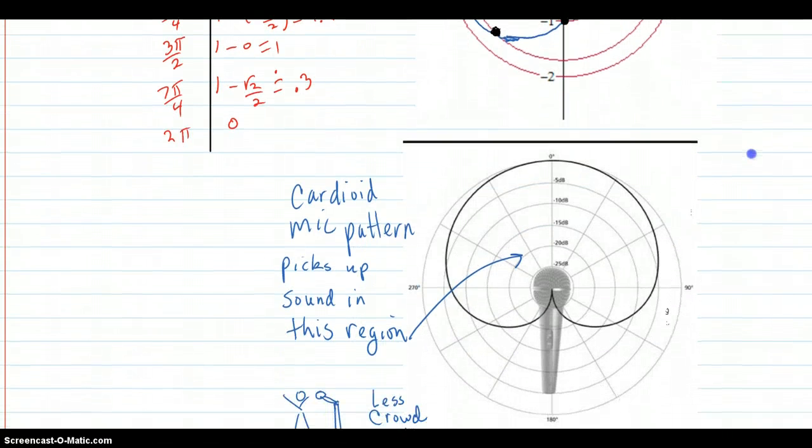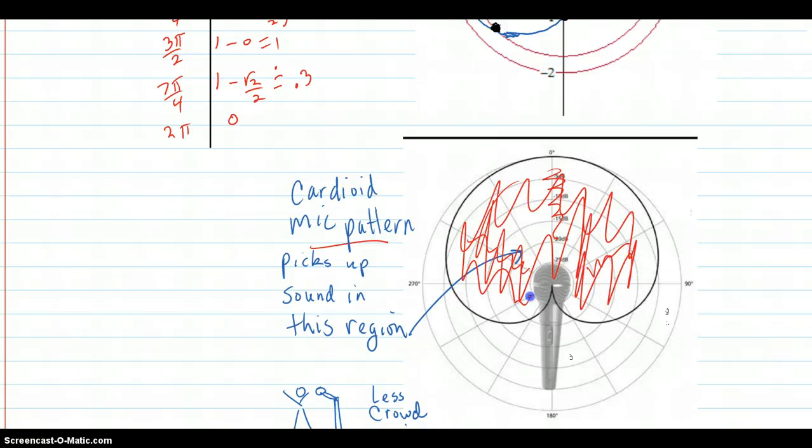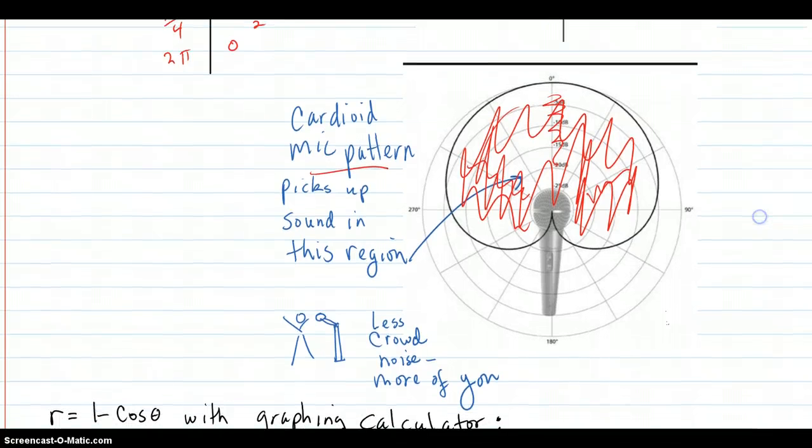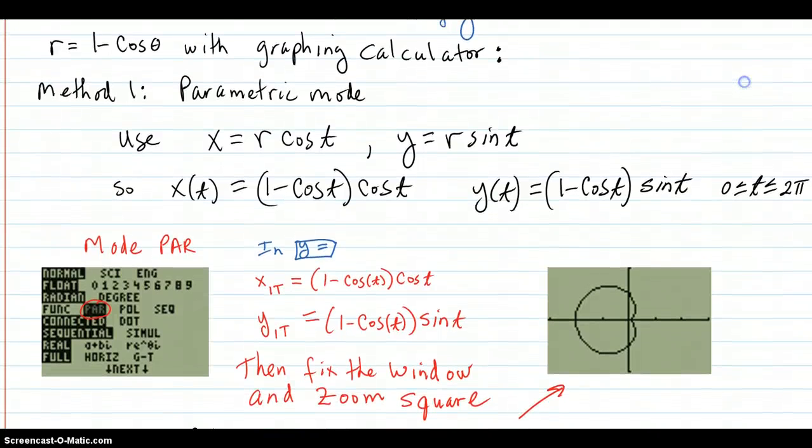And just for your information, there's a cardioid mic pattern, which looks like this, so that it picks up really great when you're standing in front of it here. A little bit less on these sides. And it cuts off a lot of stuff behind the mic. It's just going to pick up in this pattern inside here. All in there is where the sound is going to pick up into this mic. Which is good if you're doing a stage situation. And here's the mic. And you're shouting into it. Then you're going to get less crowd noise out here behind the mic. And more of you. And that might be what you want. Anyway, that's a cardioid pattern, very popular with mics.